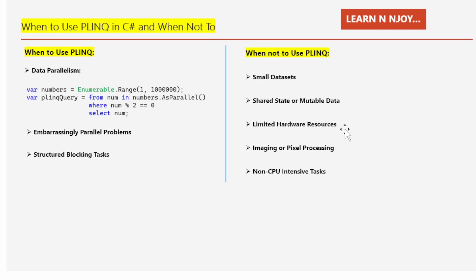Number three: limited hardware resources. If your CPU cores are limited, using PLINQ for parallel execution might not provide significant performance improvements and could degrade performance due to increased overhead. Number four: image or pixel processing. When performing image processing, collecting millions of pixels into an output sequence, the collation process can create a bottleneck and slow down performance. In such cases it's more efficient to bypass PLINQ and use other techniques like the Parallel class or task parallelism.